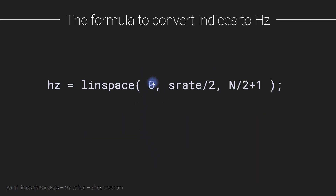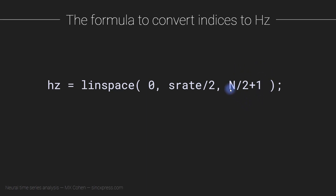In this video, I showed you the formula for converting frequencies from arbitrary indices into units of Hertz: linearly spaced numbers from zero to the Nyquist frequency, which is one half the sampling rate. Zero is the lower bound and Nyquist is the upper bound. The number of frequencies between zero and Nyquist is N/2 + 1, where N is the number of time points. To understand why N/2 + 1 is the right answer, you need to learn about positive and negative frequencies in the Fourier transform — that's coming in the next video.